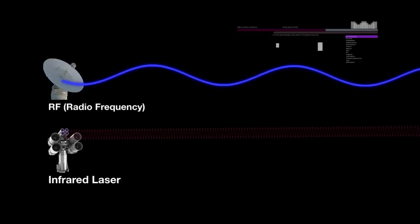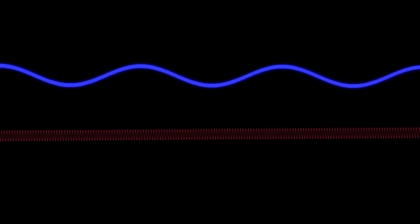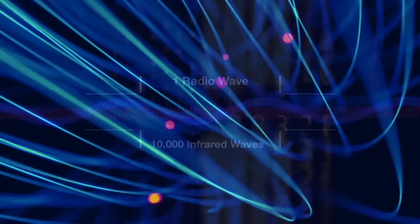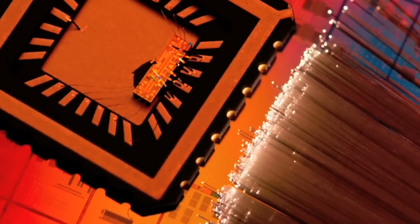Why lasers? Radio frequency and lasers both travel at the speed of light and in the form of a wave, but 10,000 infrared waves can fit into one radio wave, which means you can get more information faster via laser light over the same period of time than you would with RF.